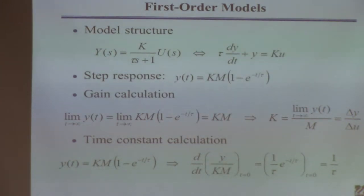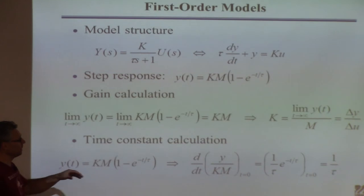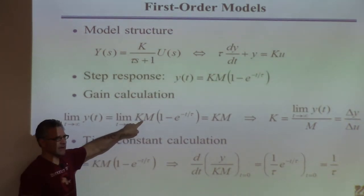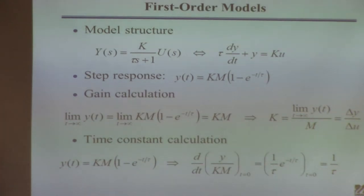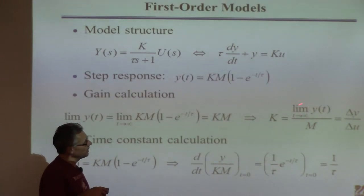We know that if we have a system that looks like this and you subject it to a step change of magnitude M, that's the solution. There's nothing new there. So let's say you know this is the solution of a first order system to a step change. And so you would like to know what K and tau are. That's what you need here.